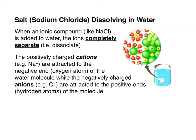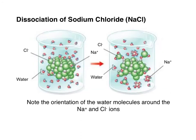These ions will not come back together because they are surrounded by water molecules. The only way to get the ionic compound to regenerate would be to remove all of the water. Here's another look at the same process: the sodium chloride crystal is attacked by water molecules, causing it to break apart and dissociate, with water molecules surrounding each of the individual ions that once made up the ionic compound.